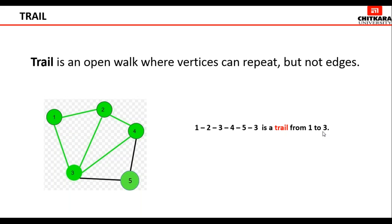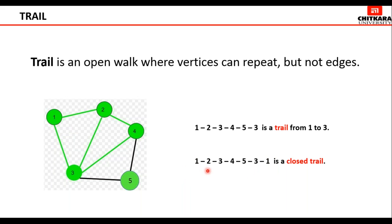Just as with walks, there are open trails and closed trails. If the initial and final vertices are different, it is an open trail. If they are the same, it is a closed trail. For example: 1, 2, 3, 4, 5, 3, 1 is a closed trail — vertex 3 is repeated, and the first and last vertex (1) are the same, but no edges are repeated.